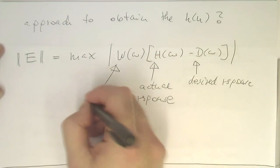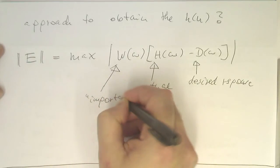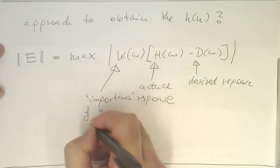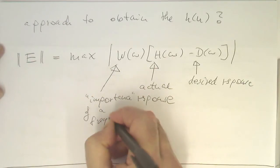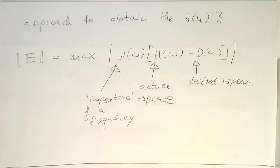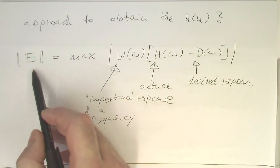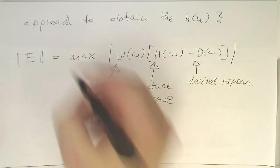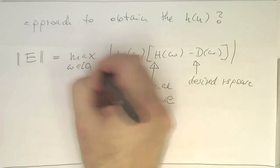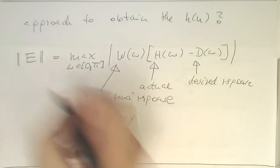And this is here a weighting factor. This gives us something like the importance of a frequency. If this weighting factor is high, then this frequency generates a high error here and will dominate this optimization process. The omega is running from 0 to pi.